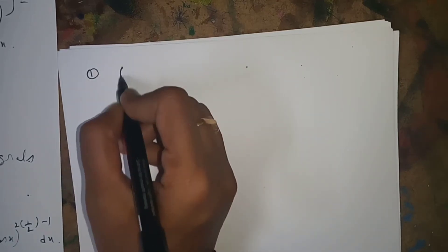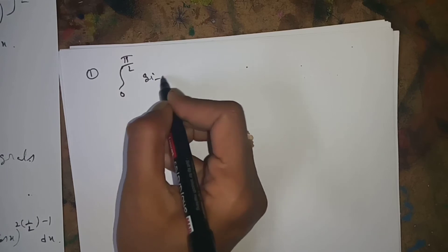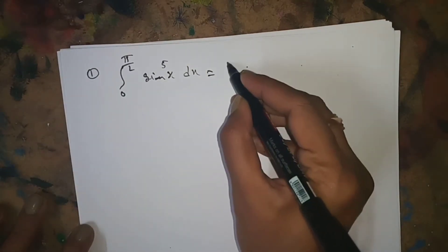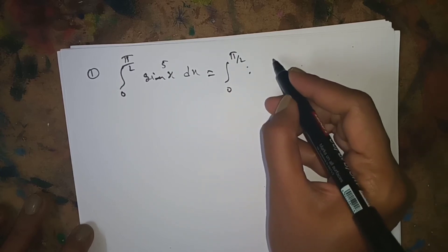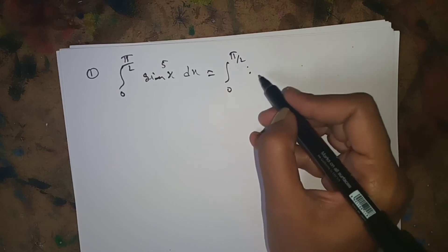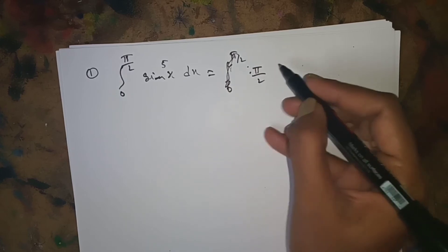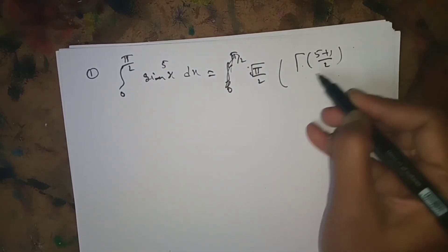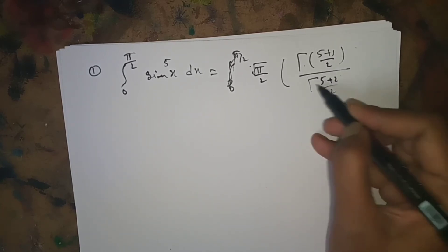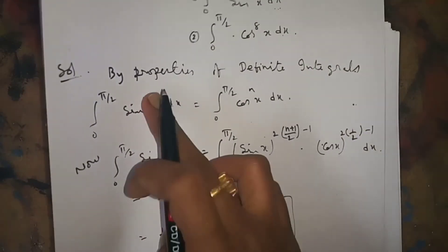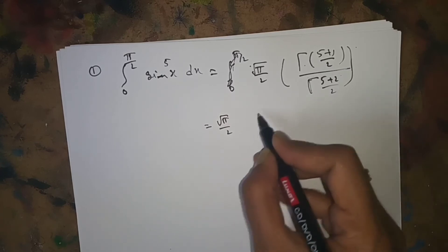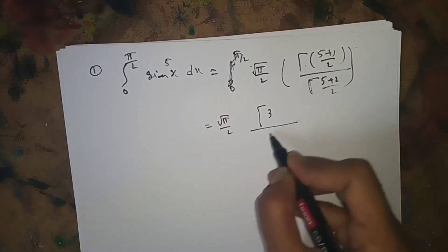Now, using this formula, we evaluate integral from 0 to π/2 of sin^5(x) dx. Applying the formula with n = 5: this equals √π/2 · Γ((5+1)/2) / Γ((5+2)/2) = √π/2 · Γ(3) / Γ(7/2).